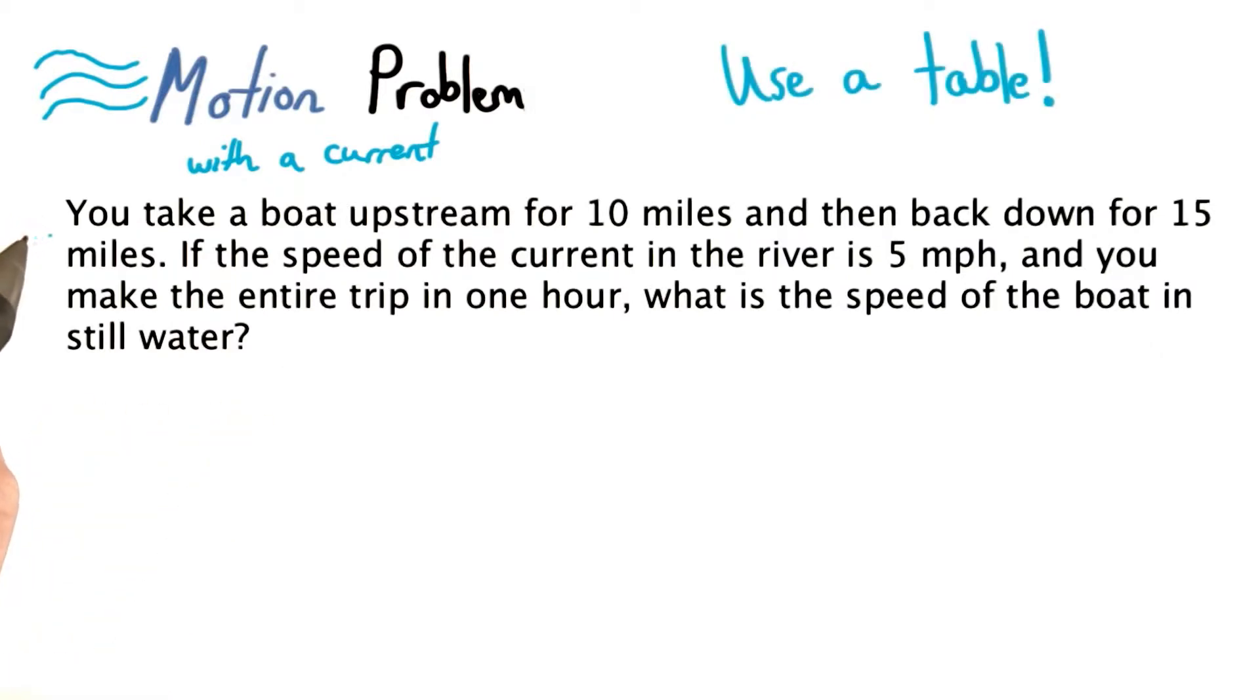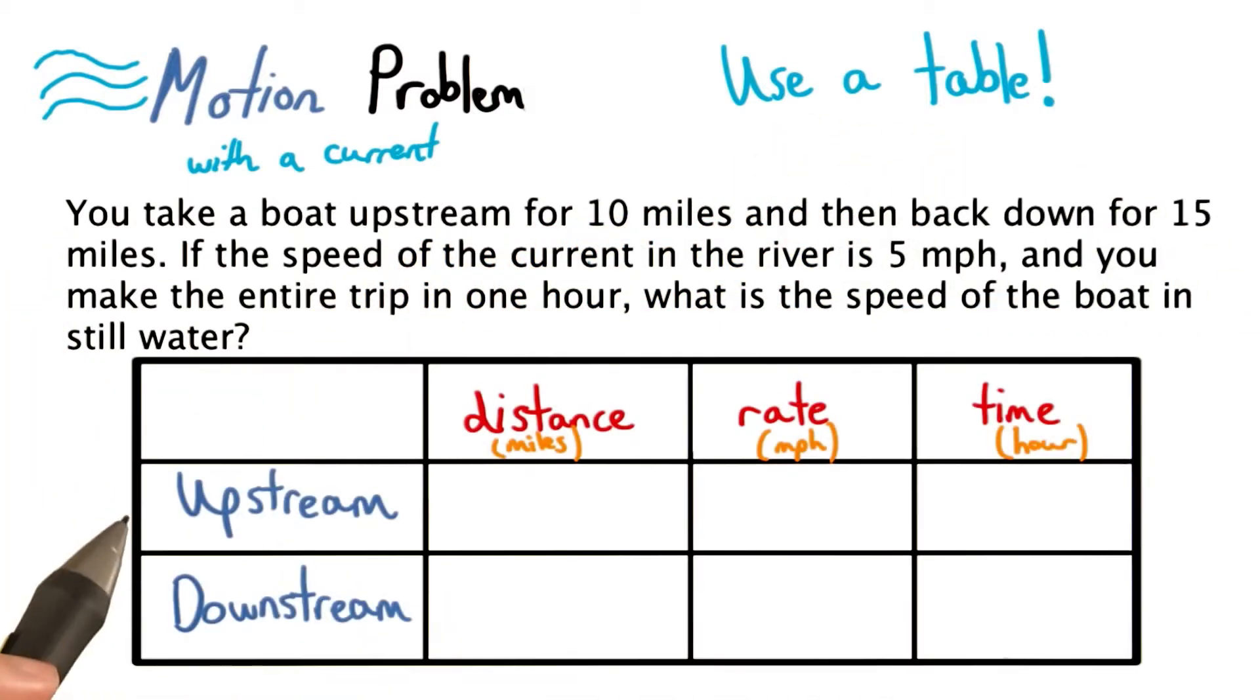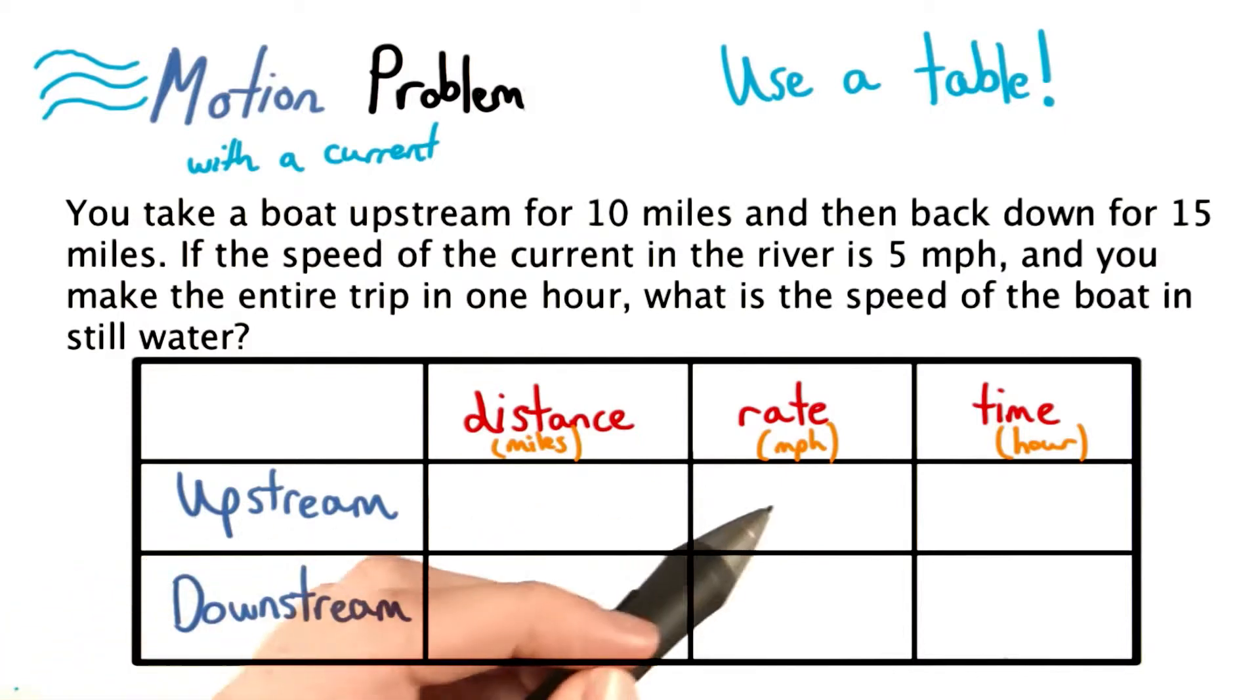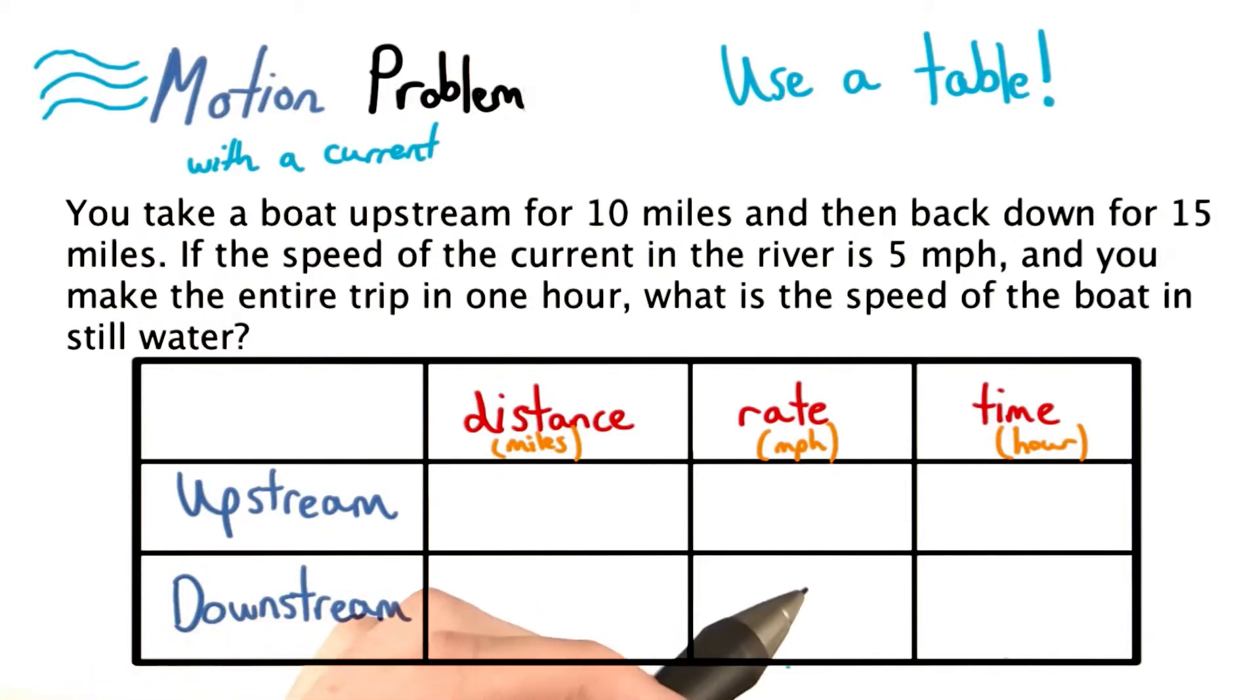Just like all the motion problems we've encountered up until this point, we want to use a table to help us organize all this information. So here's my table, and we'll have the distance for the boat upstream, its rate and its time, and the distance of the boat downstream with that rate and that corresponding time as well.